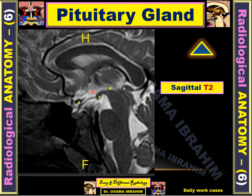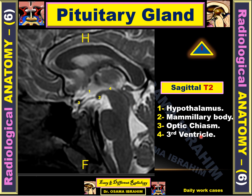Number two represents the mammillary body, between the midbrain and the tuber cinereum. The anterior structure to the infundibulum — number three — represents the optic chiasm, with the infundibulum and pituitary gland within the sella turcica also visible. Number four represents the CSF within the third ventricle.